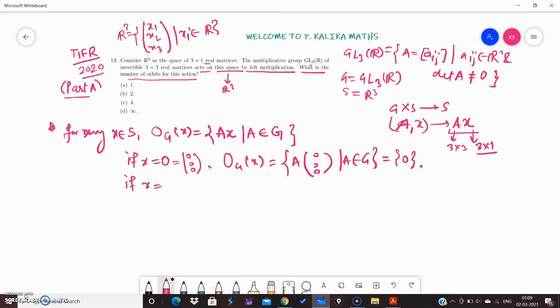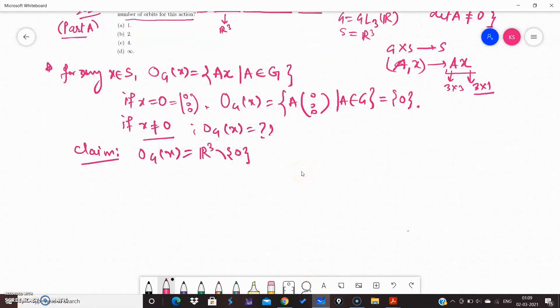If X is a non-zero vector, then what will be your orbit? For this, I claim that the orbit for a non-zero vector X will be the whole space R³ except the zero vector. For this claim, we need a little bit of linear algebra. We will see some result from linear algebra, then we will prove it easily.